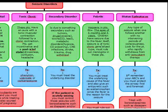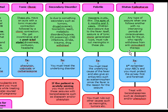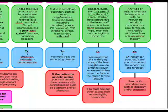Febrile seizures occur between the ages of 6 months and 5 years. The seizure happens because of the fever, so once you treat the fever the seizure will resolve. These patients have only a slightly increased chance of developing a permanent seizure disorder. The seizure type is typically tonic-clonic generalized. Always rule out meningitis, and give an antipyretic such as acetaminophen since it's the febrile illness causing the seizure.